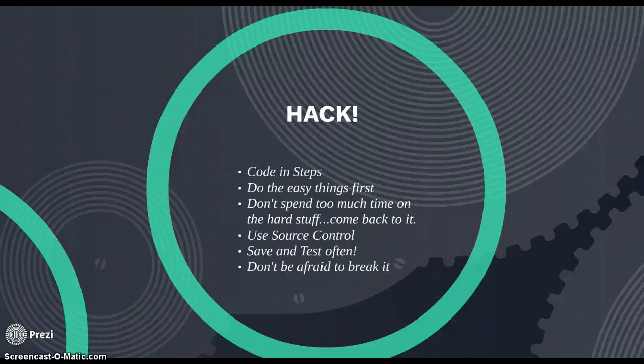Any time you get something cool working in your game, compile it, run it, make sure it works. Then back out of the folder, copy the folder, paste it, and give it a revision number — like Space Invaders version 1, Space Invaders version 2. That way, if you mess something up really badly, you don't have to worry about it. That's a great way to protect yourself.